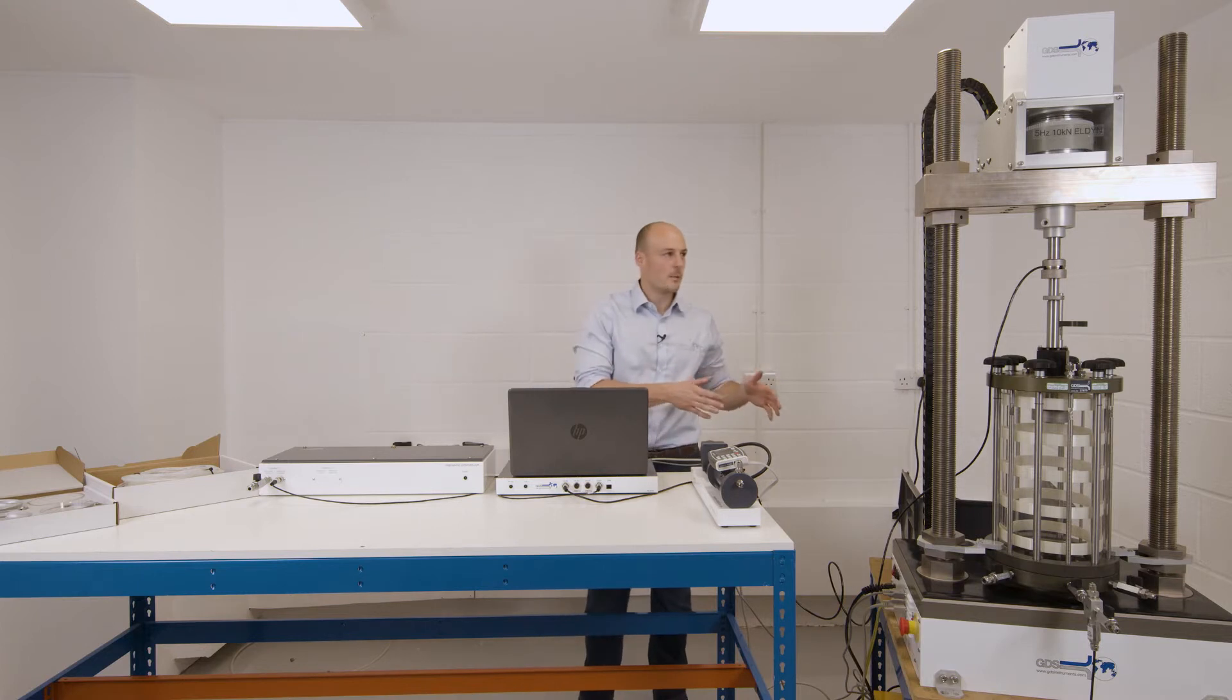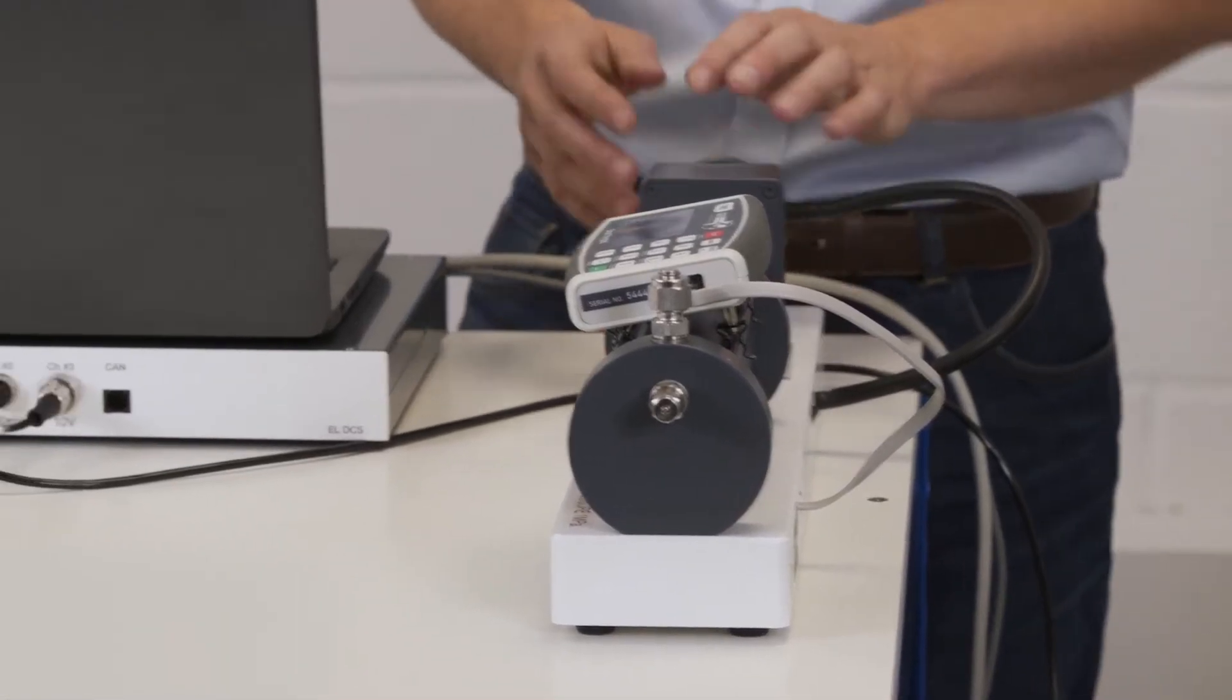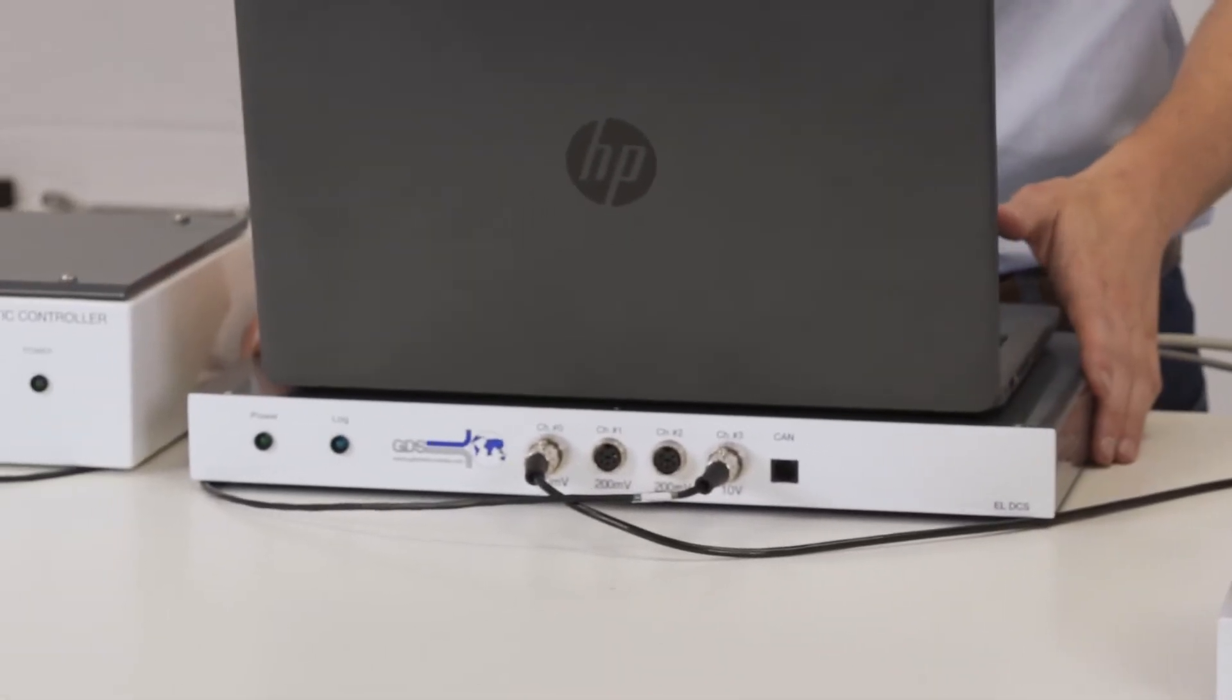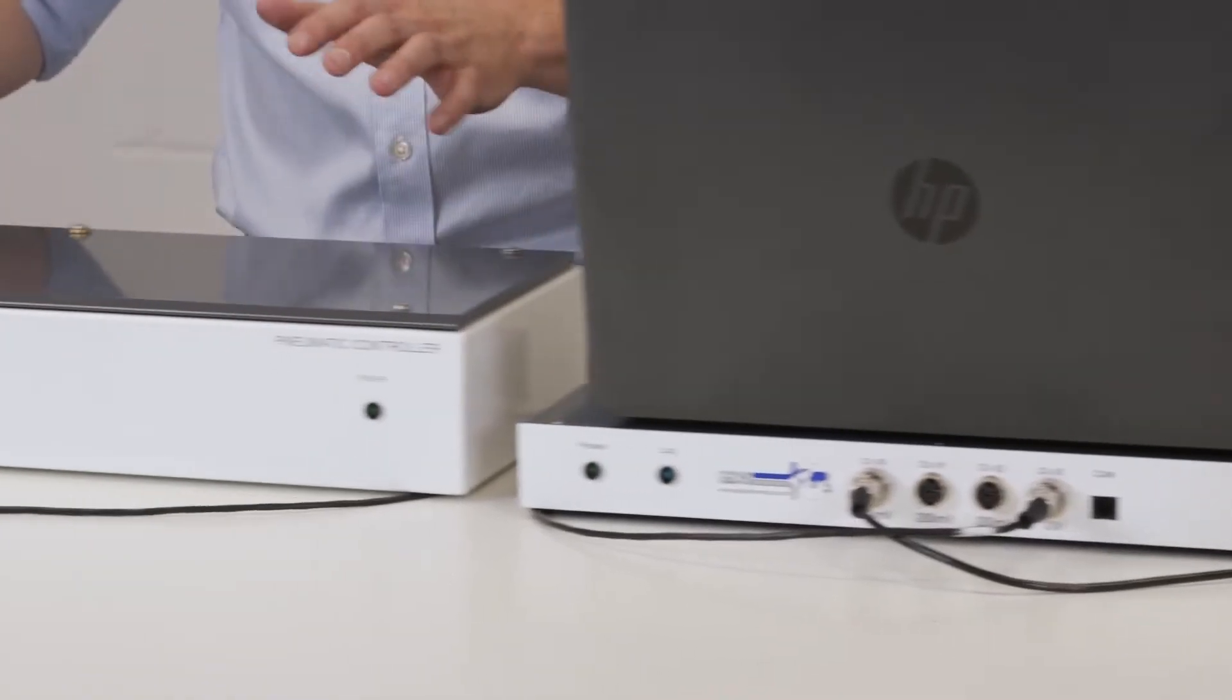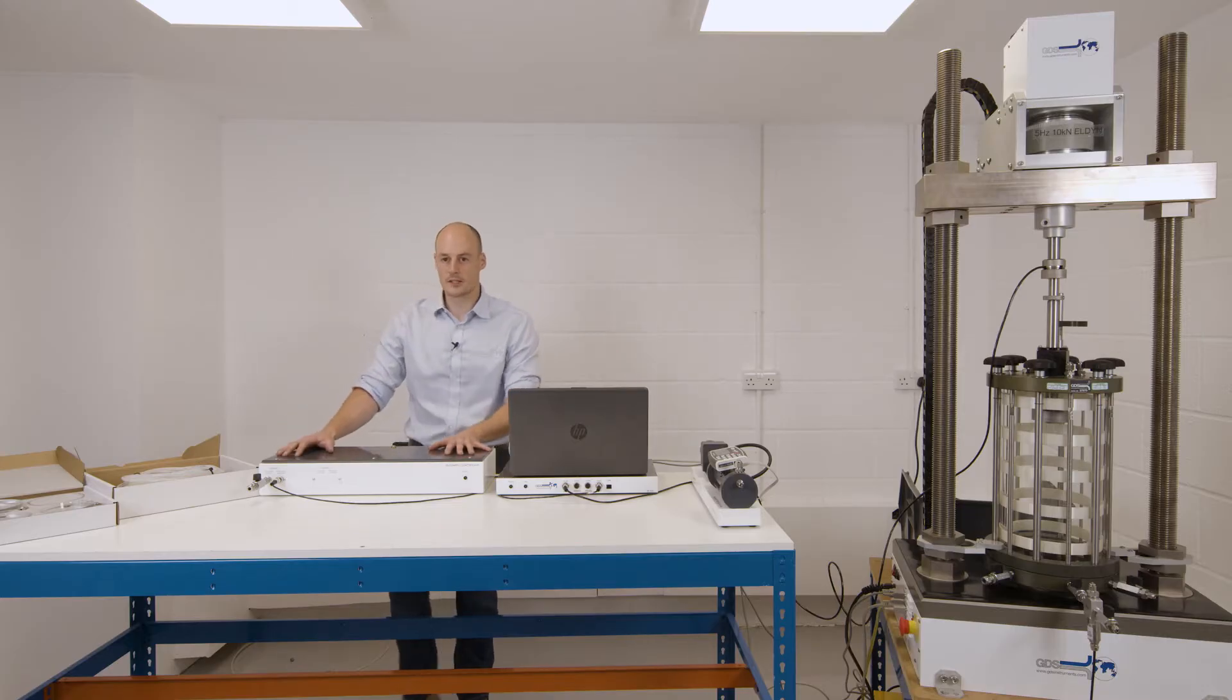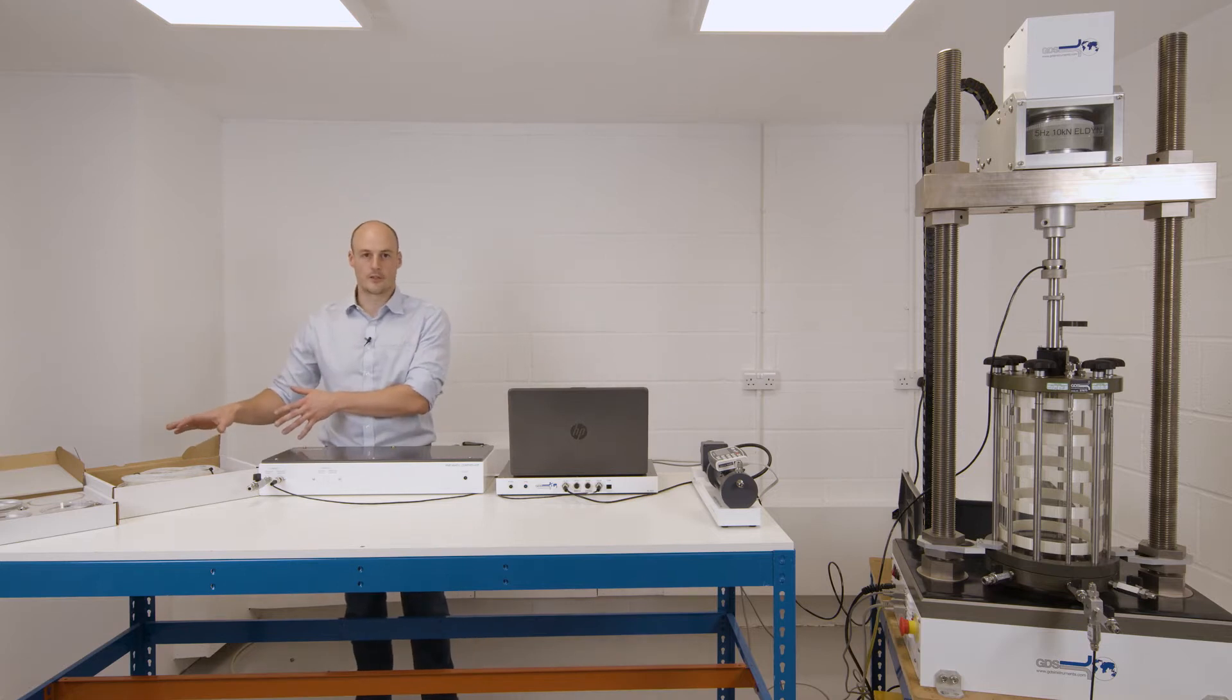Main system components: as you can see here we have the main frame with a cell, a pressure controller, control box for our main control of the frame, a pneumatic controller for cell pressure and some of our optional accessories over here.